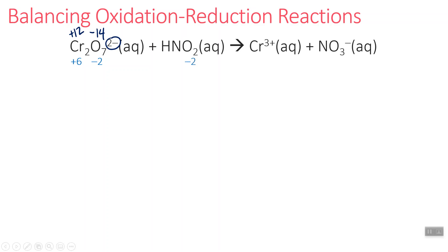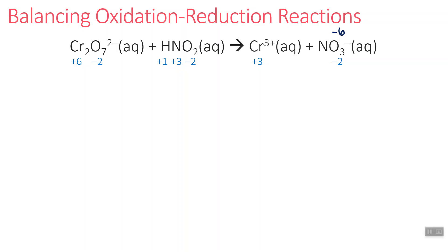For HNO2: oxygen is minus two, hydrogen is plus one, and since it's a neutral molecule the oxidation states add up to zero. With two oxygens giving minus four and hydrogen giving plus one, nitrogen must be plus three. The next species is a monatomic ion, so its oxidation state equals its charge. For NO3 minus, the overall charge is minus one; three oxygens give minus six, so nitrogen must be plus five.